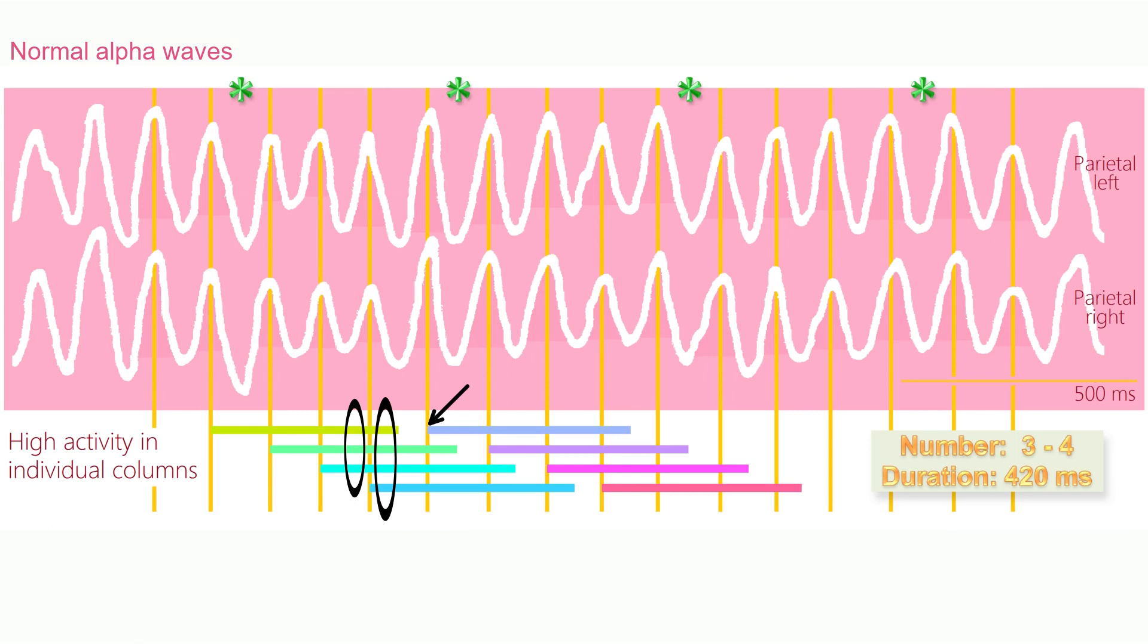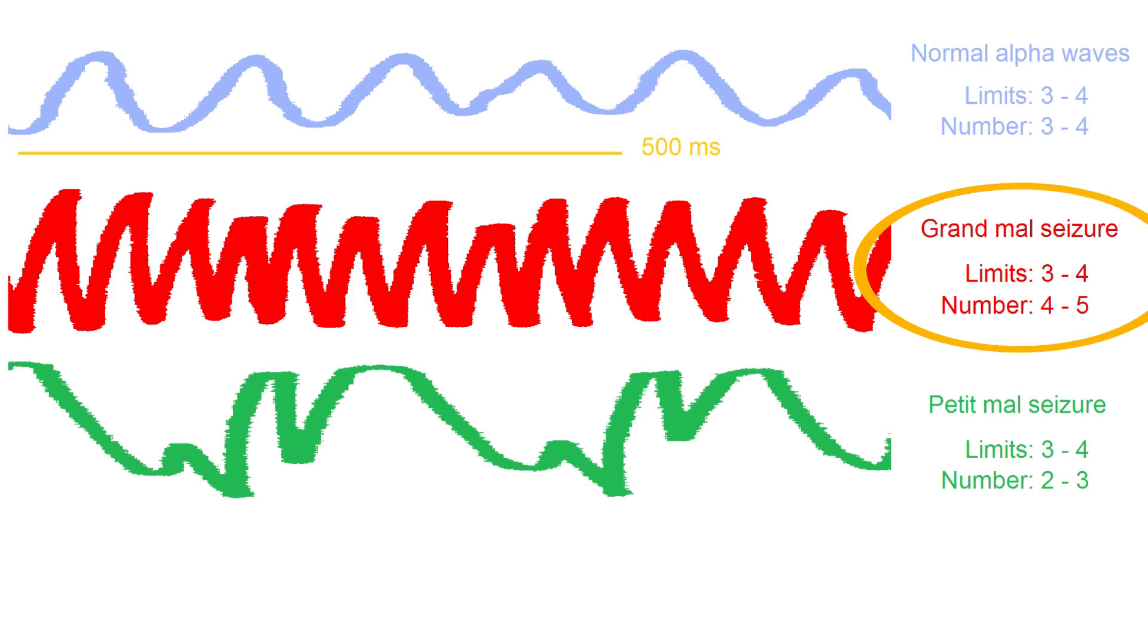It is a critical moment every time the number reaches the upper limit. A mistake here can lead to a number that exceeds the upper limit. The red curve is from an epileptic seizure where the number alternates between the upper limit and one step higher.